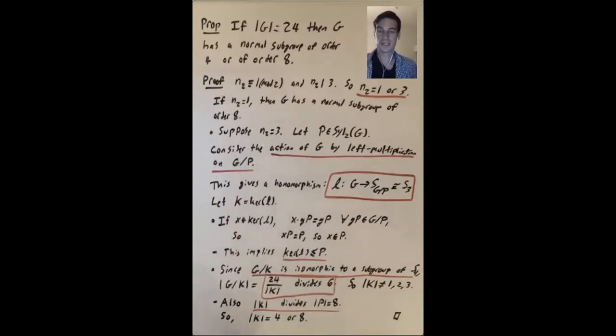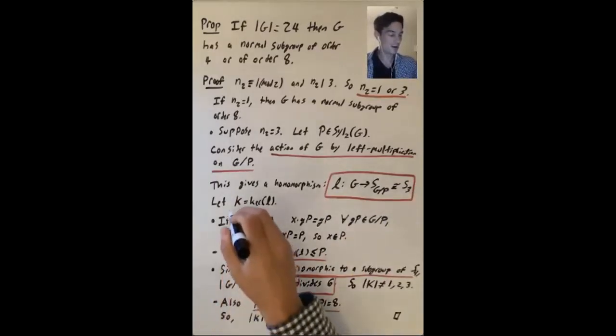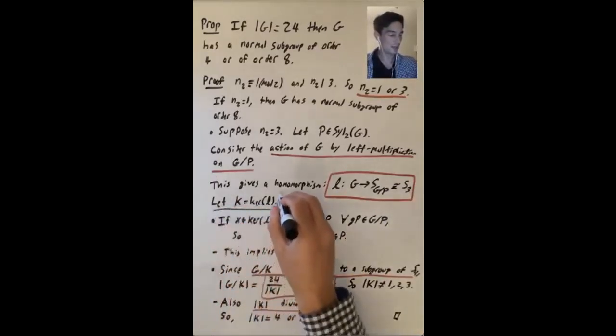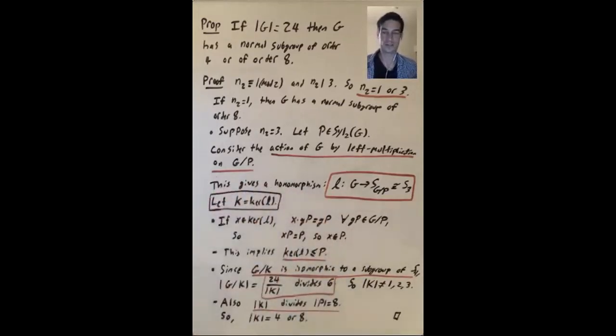Let's consider the action of g by left multiplication on the set of left cosets of P and g. P has size 8, g has size 24, so there's three of these things. So what does that give us? It gives us a homomorphism from g to the symmetric group on these three left cosets. But that's isomorphic to S3, because the symmetric group on any three things is isomorphic to S3.